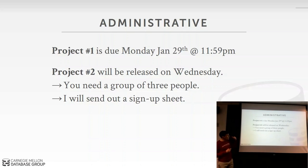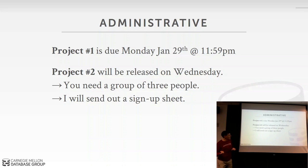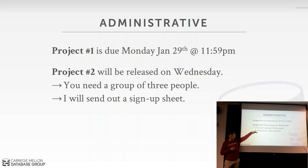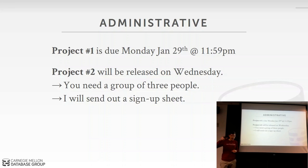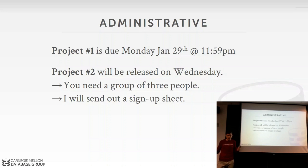Some quick administrative things: project one is due tonight at midnight. There is one particular issue with client format but we'll take care of that during grading. Project two will be released this Wednesday. For this project you want to be in groups of three, because it'll take about a month to work on. I'll send out a sign-up sheet on Piazza — a Google spreadsheet where you fill out who the members are. If you don't have a group there'll be a free agent list, and by Wednesday if you still can't find a group I'll start pairing people together.